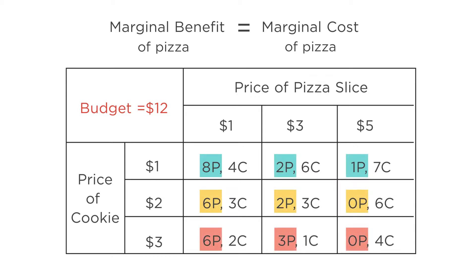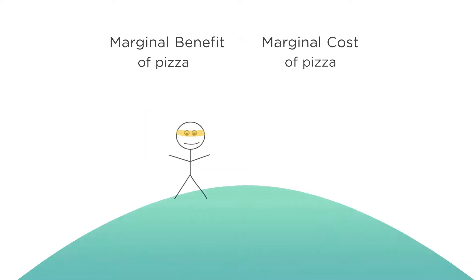Why is this? Because a rise in the price of pizza relative to the price of cookies is a rise in the opportunity cost of consuming pizza. You now have to give up more cookies to get a slice of pizza, and as a result you want less pizza. The ratio of the price of pizza to the price of cookies is the marginal cost of pizza, so when the price of pizza goes up, the marginal cost of eating pizza goes up.